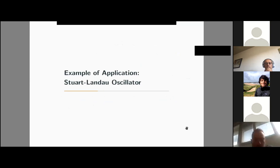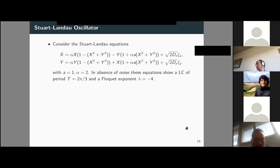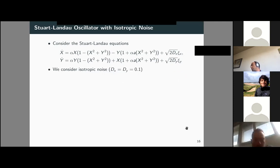I will illustrate this machinery by applying it to different examples. First, I start with the Stuart-Landau oscillator, which is well known. We set parameters so that it has a limit cycle, and we first consider the case of isotropic noise.